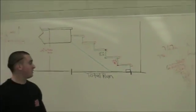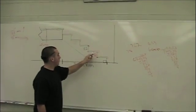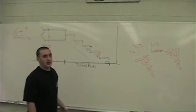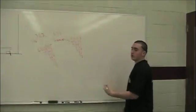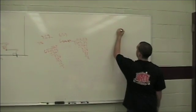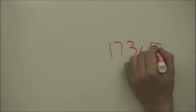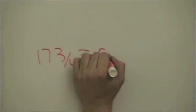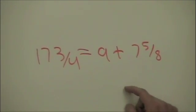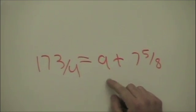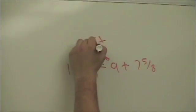The next step is figuring out what the unit run is. In our class we take 17 and 3/4 as our unit rise and unit run added together. So 17 and 3/4 equals A plus 7 and 5/8. This is the formula you will use to figure out what A is. A is considered your unit run.